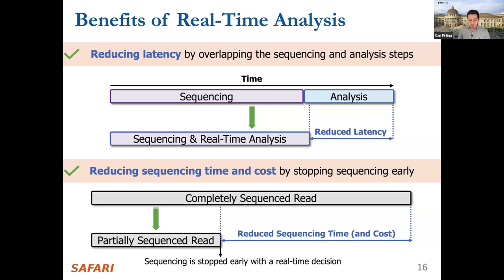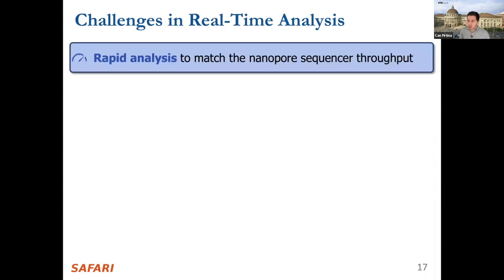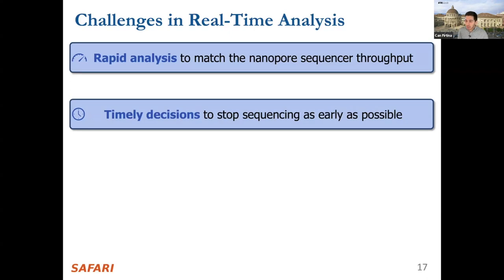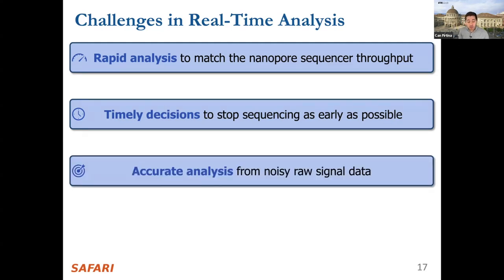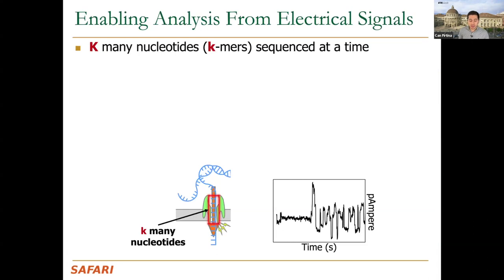Achieving real-time analysis presents several challenges: you need rapid analysis to match data generation speed; timely decisions to stop sequencing as early as possible; accurate analysis; handling noisy raw electrical signals; and power-efficient computation, especially for portable sequencing on mobile devices or personal computers where high-power GPU resources are unavailable.